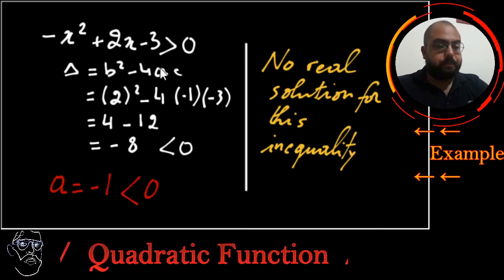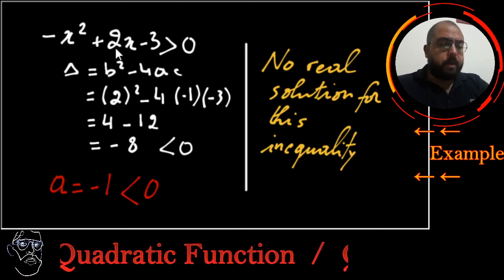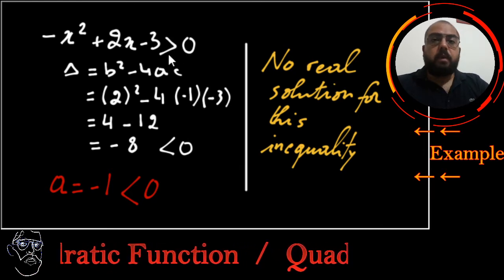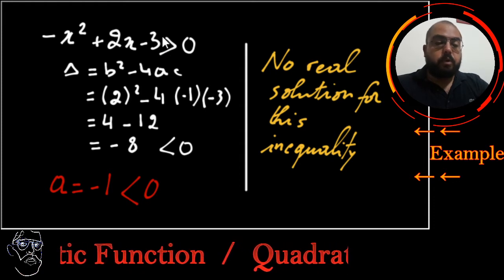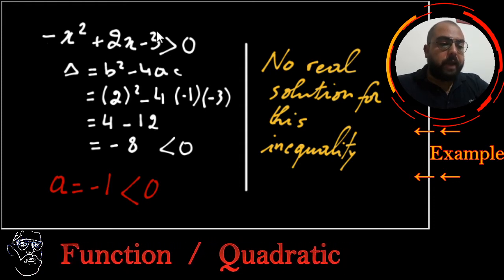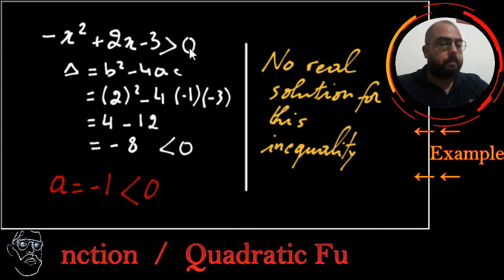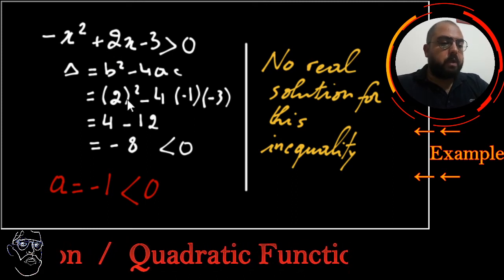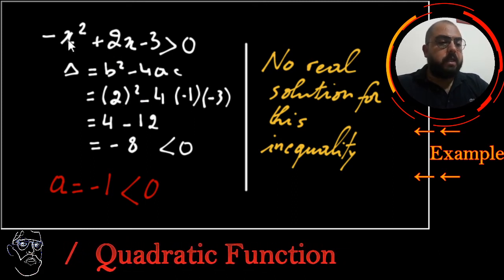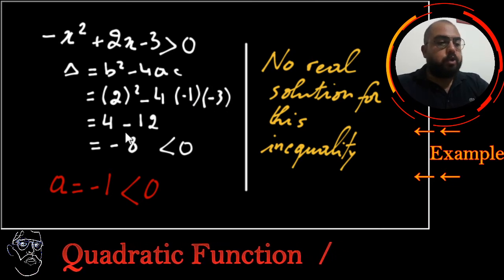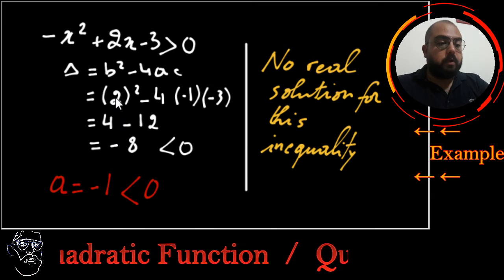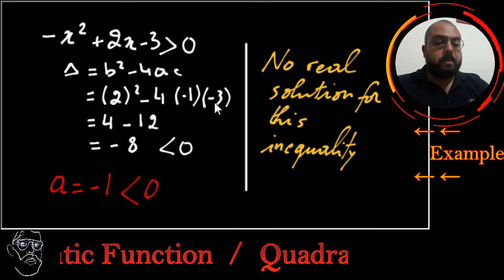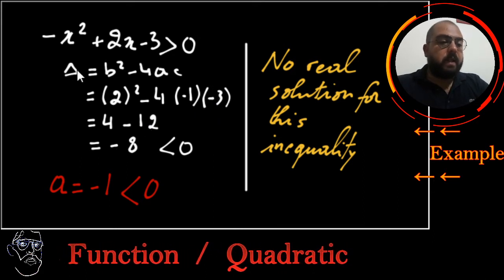Let's take another example: -x² + 2x + 3 > 0. I'm looking for the values of x which will give me a positive value. I will calculate delta. Delta is b² - 4ac: 2² - 4 × (-1) × (-3). 2² is 4, minus 4 × (-1) × (-3) is -12. So delta = 4 - 12 = -8. Delta is again negative.